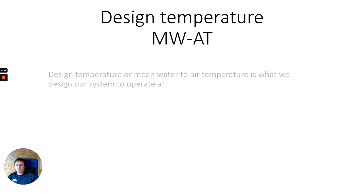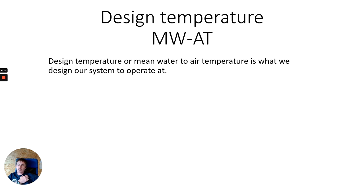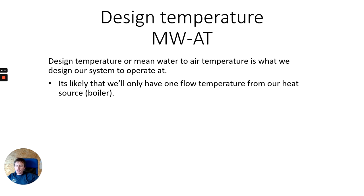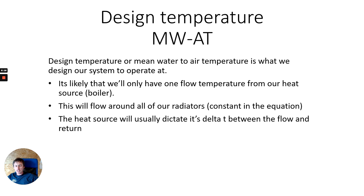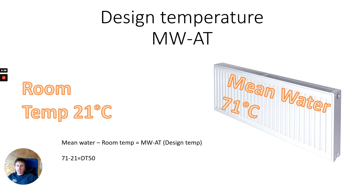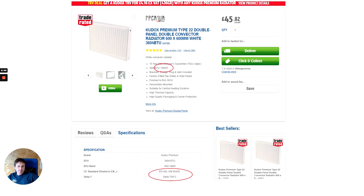The design temperature — mean water to air temperature — is what we design our system to operate at. It's likely we'll only have one flow from our heat source, whether that's a boiler or an air source heat pump, which flows around all our radiators and is a constant in the equation. The heat source will usually dictate its delta T between flow and return. For reference, radiators are sized to BSEN 442 as a standard. In this example, we have a room temperature of 21°C and a mean water temperature of 71°C; subtracting room temperature from mean water temperature gives us 50 — so this is the design temperature, DT50.